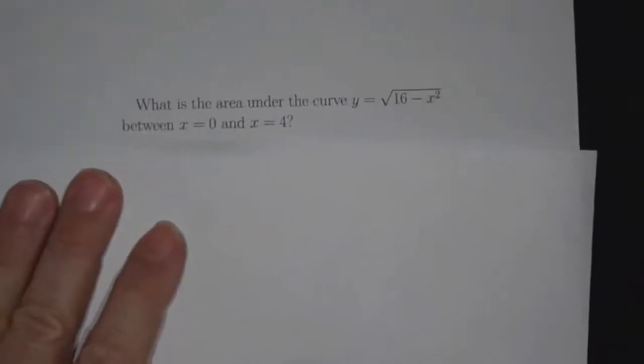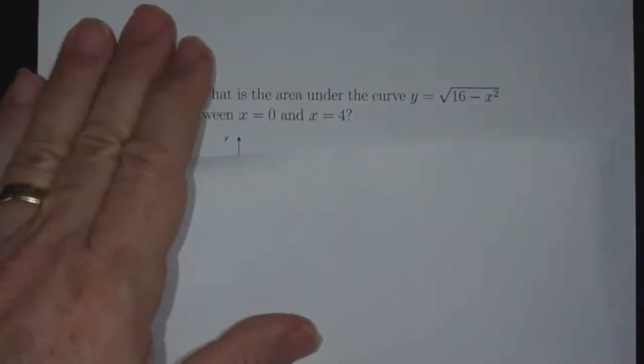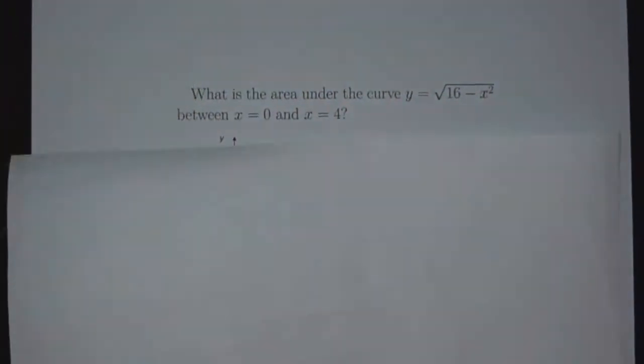Now we're going to try to figure out an area problem. We did distance, now we'll do area. We want to find the area under the curve y equals square root of 16 minus x squared between x equals 0 and x equals 4.